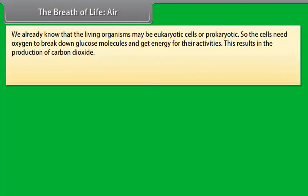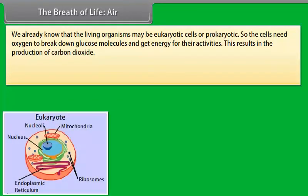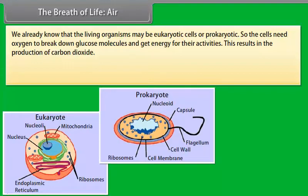We already know that living organisms may be eukaryotic cells or prokaryotic. The cells need oxygen to break down glucose molecules and get energy for their activities. This results in the production of carbon dioxide.